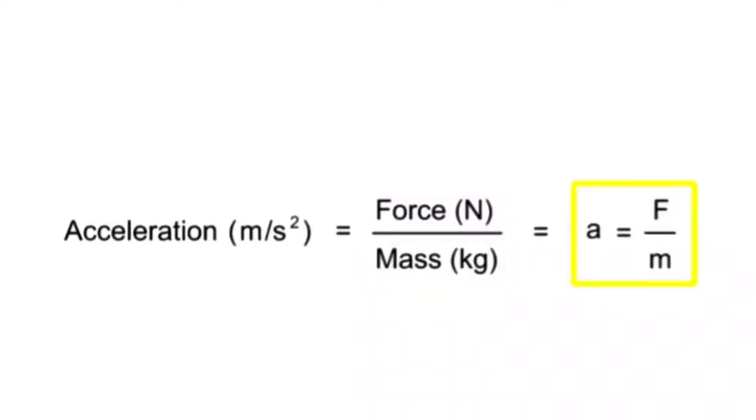Or A equals F divided by M, where acceleration is measured in meters per second squared, force is measured in newtons, and mass is measured in kilograms.